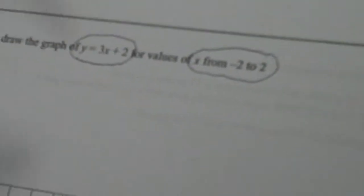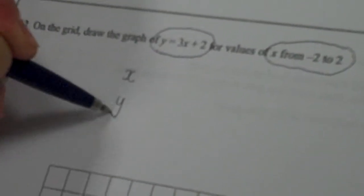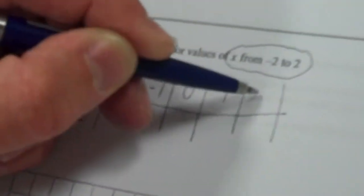What I need to do is find out my y values and this is often best done with a table. So I'm going to create a table where I've chosen values for x and I work out values for y. So I know my x values are going to go from minus 2, minus 1, 0, 1 and 2.